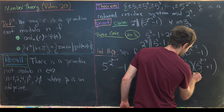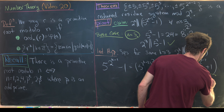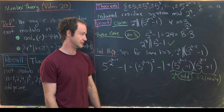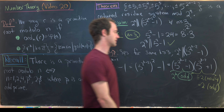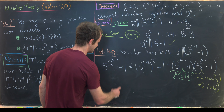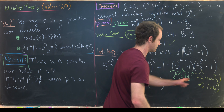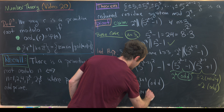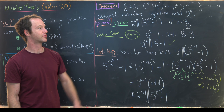For the second factor, 5^(2^(k−2)) + 1 ≡ 1^(2^(k−2)) + 1 = 2 mod 4, since 5 ≡ 1 mod 4. Everything congruent to 2 mod 4 equals 2 times an odd number. Multiplying: the product is 2^k × (odd) × 2 × (odd) = 2^(k+1) × (odd). So 2^(k+1) is the largest power of 2 dividing 5^(2^(k−1)) − 1, completing the induction.